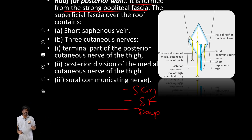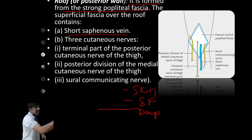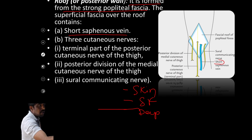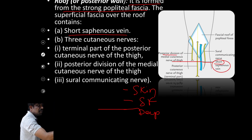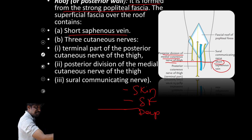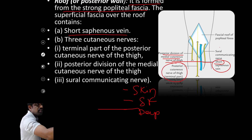You can see here the blue color — it is the short saphenous vein — along with the posterior cutaneous nerve of the thigh and the posterior communicating nerve, present in the superficial layer of the roof.